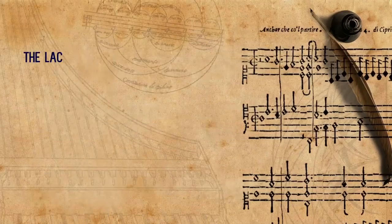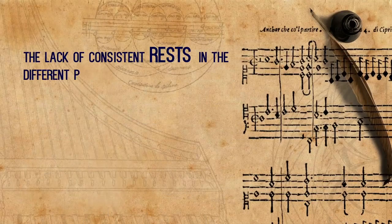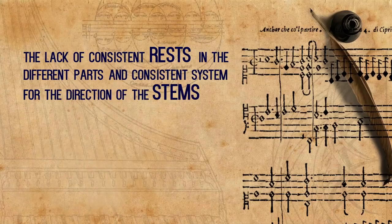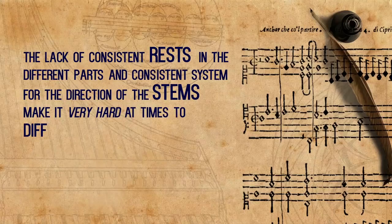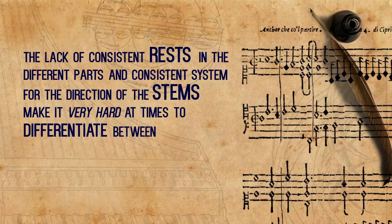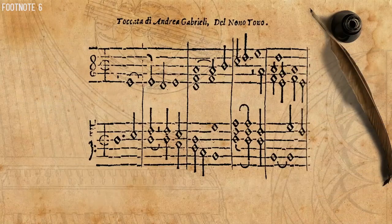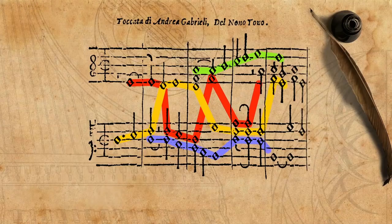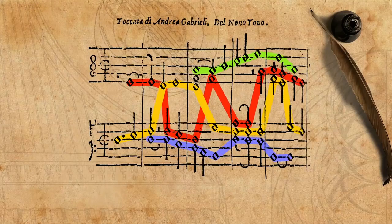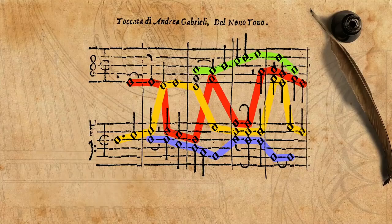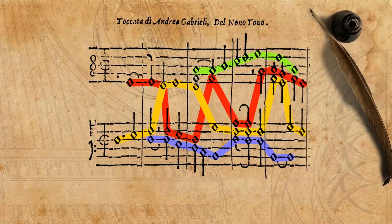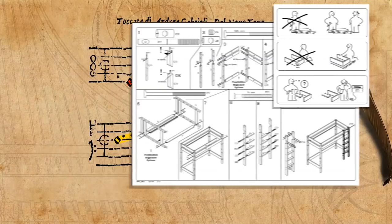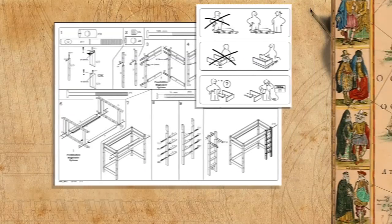The lack of consistent rests in the different parts, and a consistent system for the direction of stems, makes it very hard at times to differentiate between the parts, especially in the common case of voice crossings. So although it seems almost like modern notation in an old font, it is still closer to the tablature in spirit — a mere instruction indicating which key to strike when.